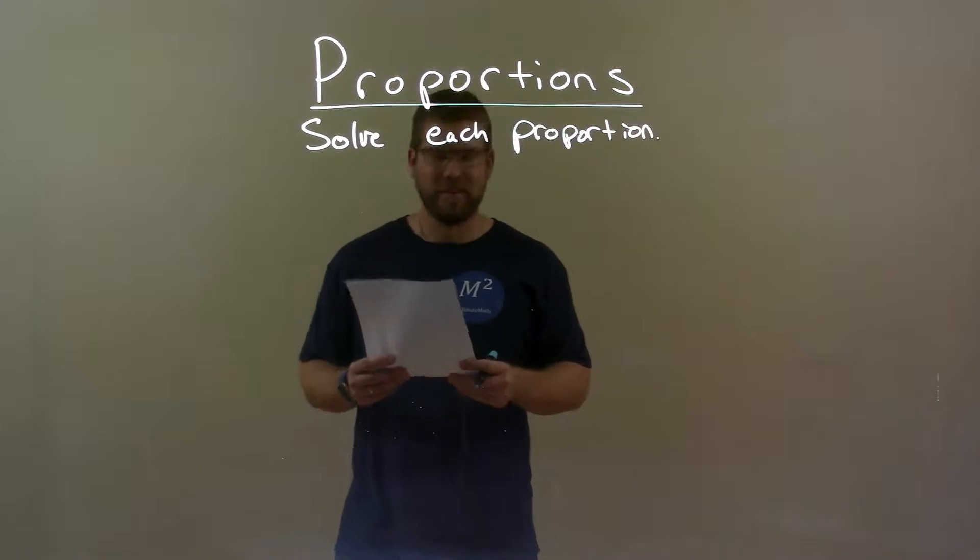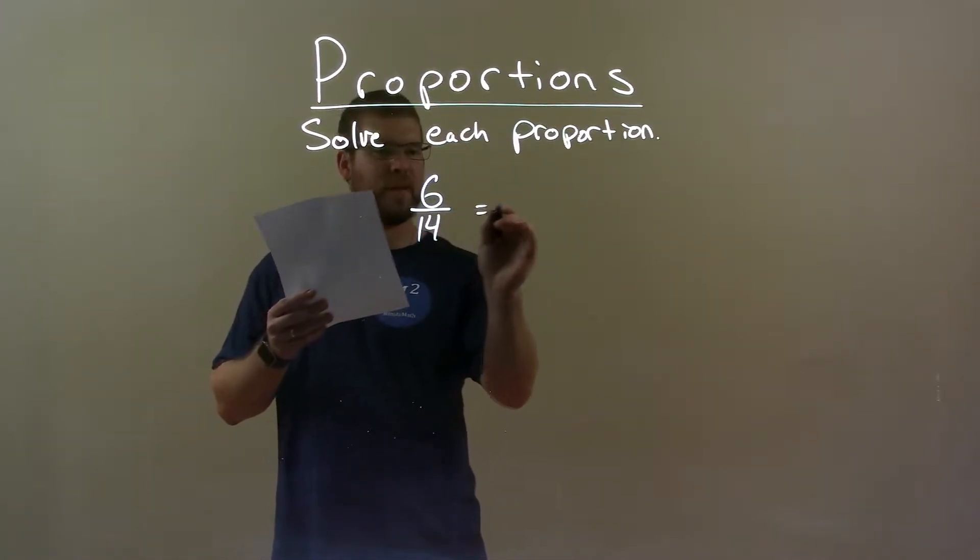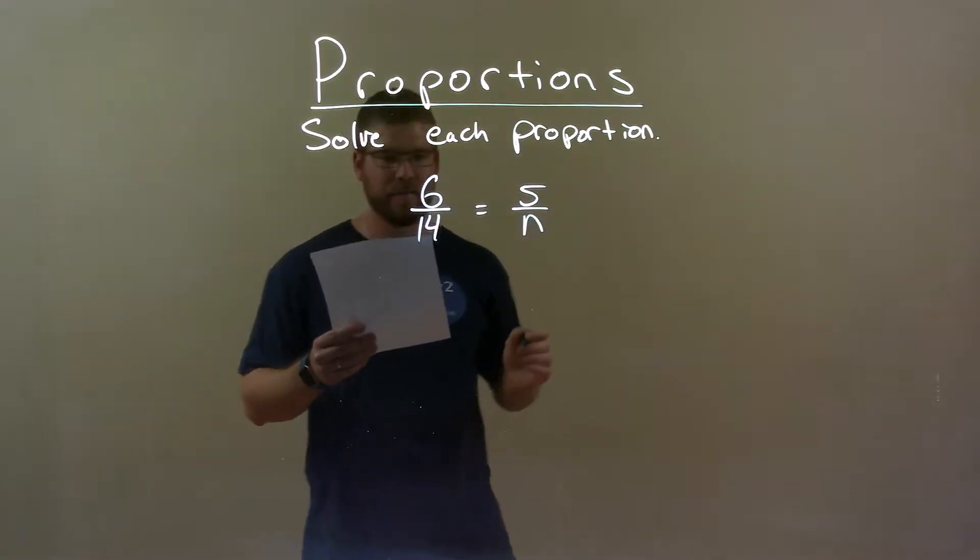So if I was given this proportion, 6 over 14 equals 5 over n, okay?